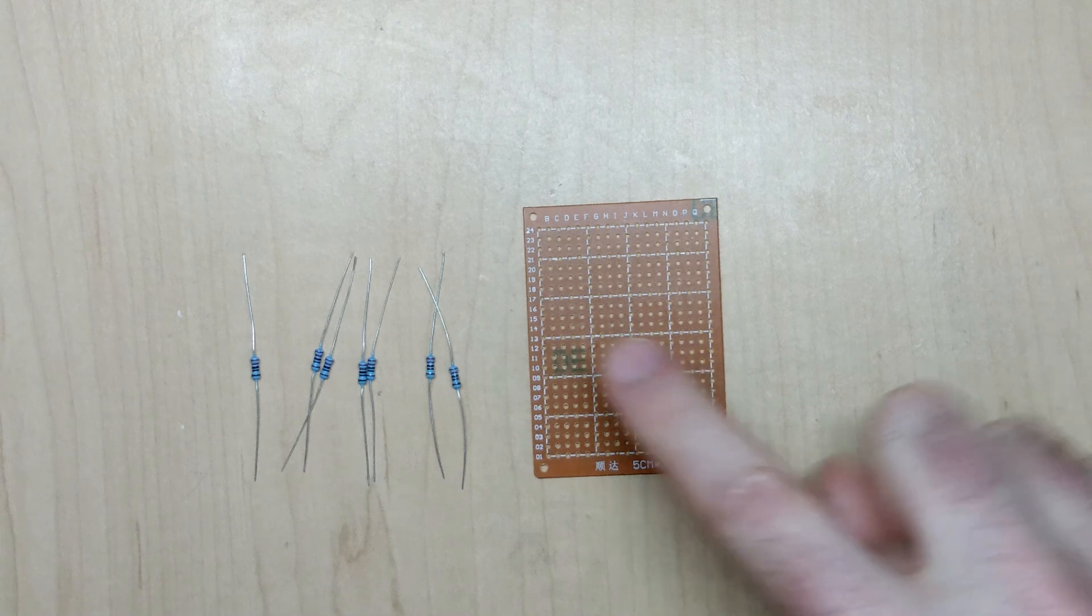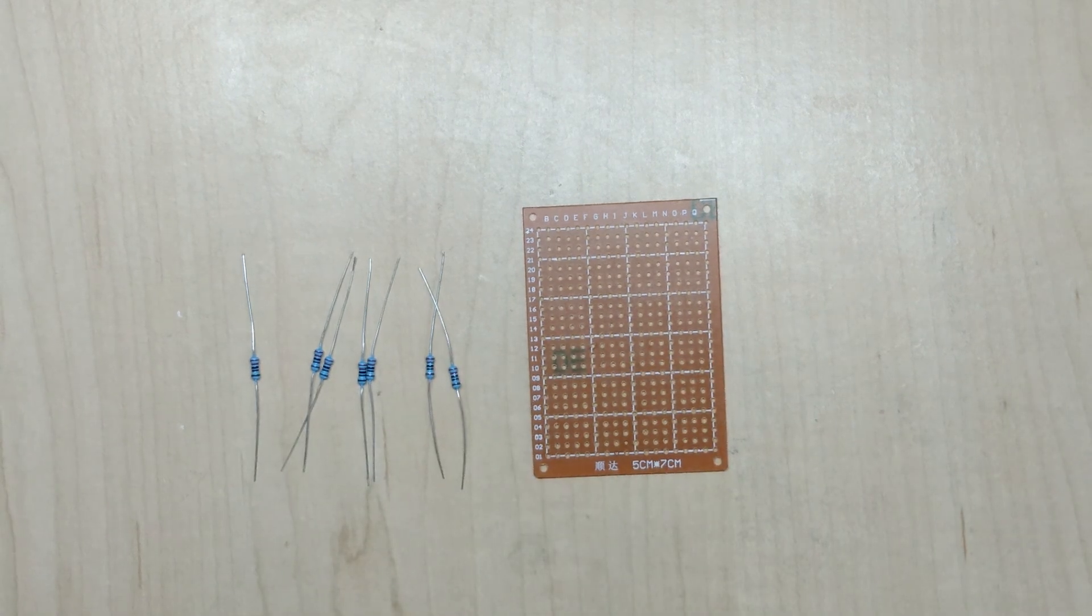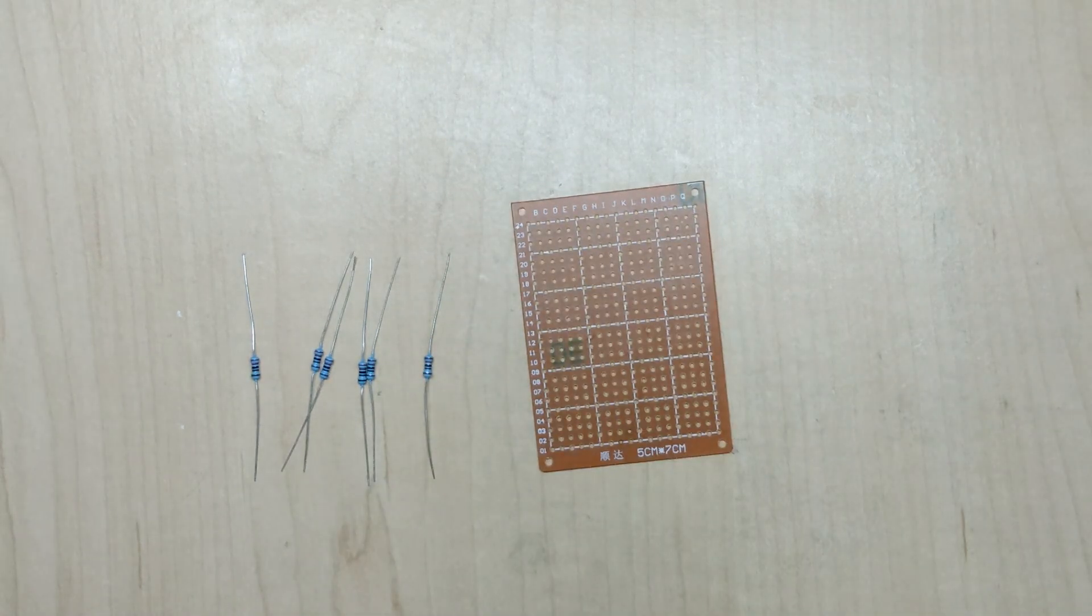I'm going to use this piece of perf board to help me line up these resistors while I'm connecting them together. You don't have to do this, you can do it directly in the PCB that you're working with.